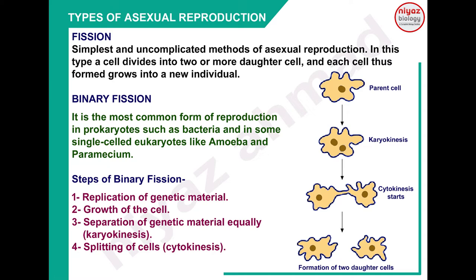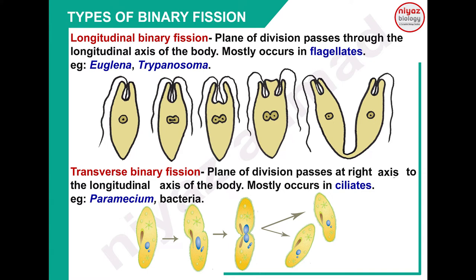Now the types of binary fission. First type is longitudinal binary fission - اس میں جو plane of division ہوتا ہے وہ لمبائی میں ہوتا ہے یعنی longitudinal axis of the body۔ یہ mostly occurs in flagellates - جتنے بھی flagella والے animals ہیں ان میں اس طرح کا binary fission ہوتا ہے۔ NEET میں اکثر یہ پوچھا جاتا ہے - Euglena اور Trypanosoma میں flagella ہوتا ہے تو longitudinal binary fission ہوگا۔ Transverse binary fission میں cell division right angle پر ہوگا - یہ generally ciliates میں ہوتا ہے جن میں cilia present ہوتے ہیں۔ Difference یاد رکھیں: longitudinal binary fission flagellates میں، transverse binary fission ciliates میں۔